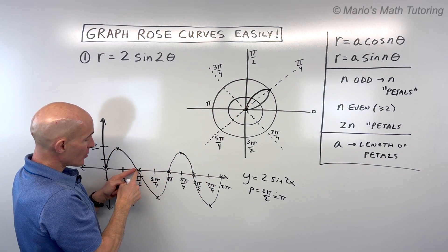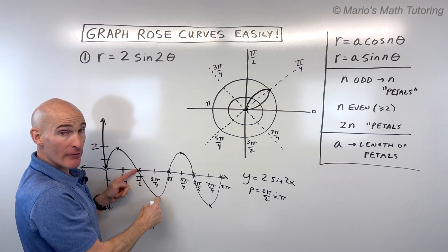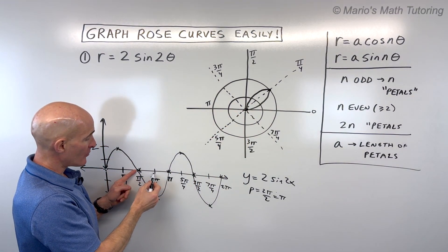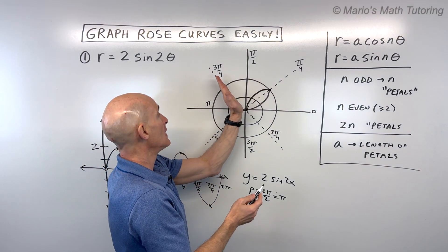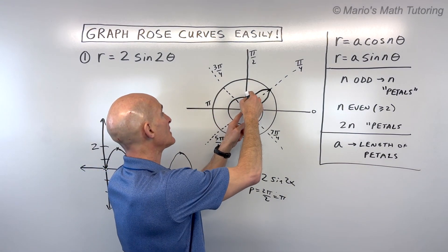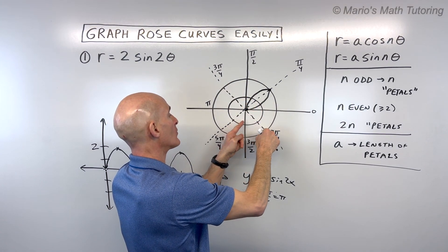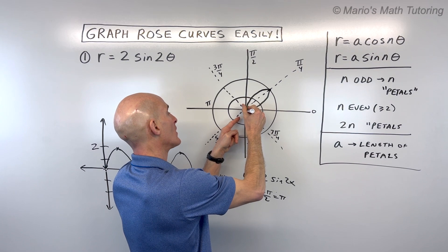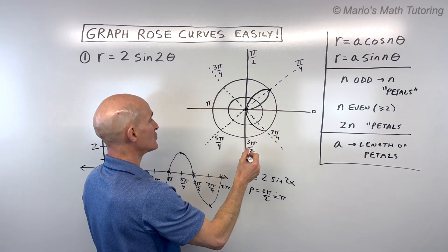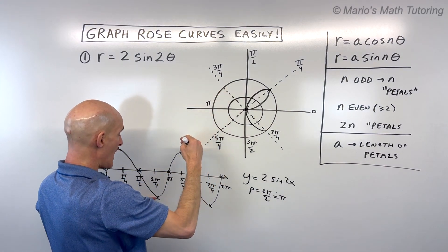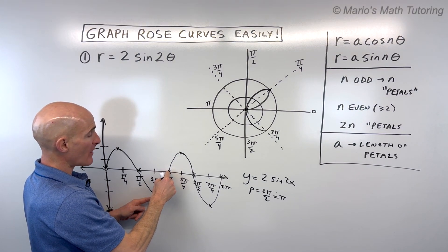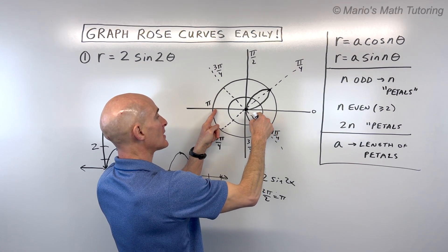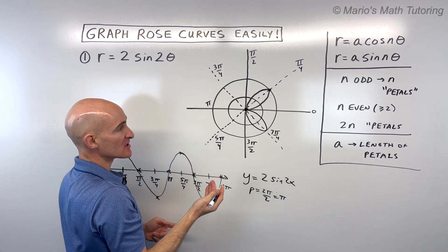Now notice we're going below the x-axis, meaning we have a negative r value. When you have a negative r value, you have to go through the pole to the other side. As I go from π/2 to 3π/4, the r value goes from 0 to negative 2, so instead of going out in that direction I go out the other way — through the pole to negative 2. Then from 3π/4 to π, the r value approaches 0, pulling it back in toward the pole.